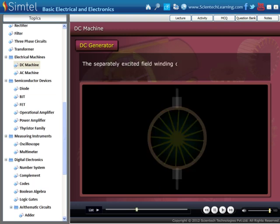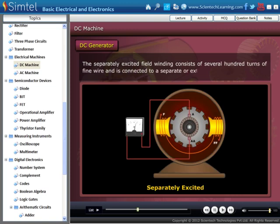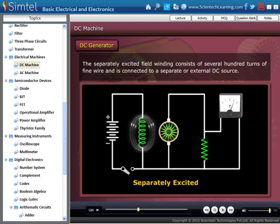First method of DC machine is separate excitation. The separately excited field winding consists of several hundred turns of fine wire and is connected to a separate or external DC source. The voltage of the external DC source has no relation with the armature voltage, that is the field winding energized from a separate supply can be designed for any convenient voltage.